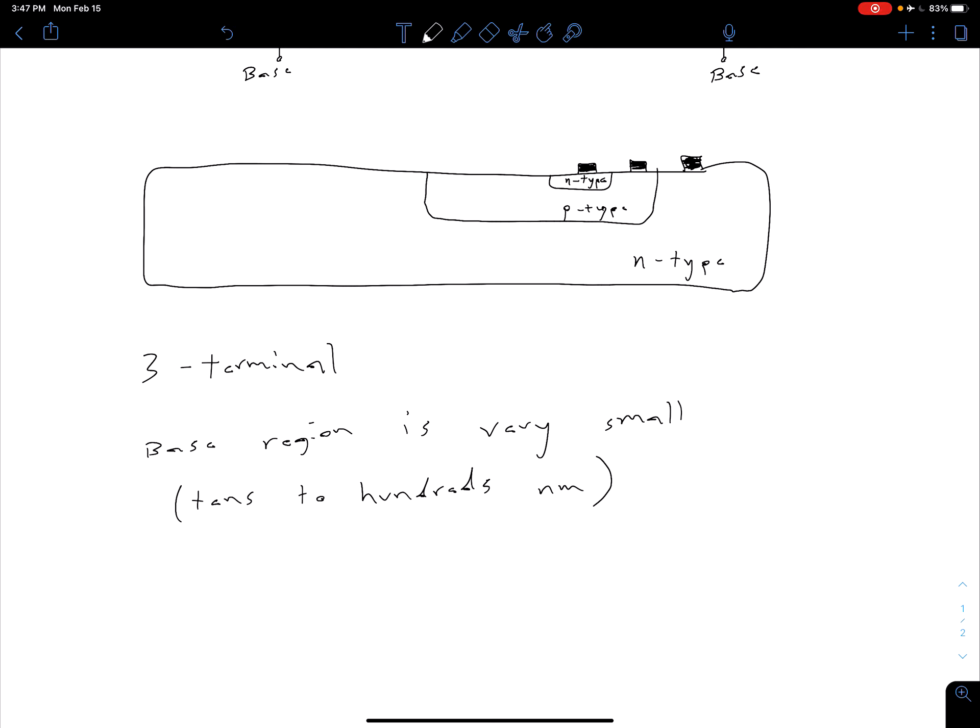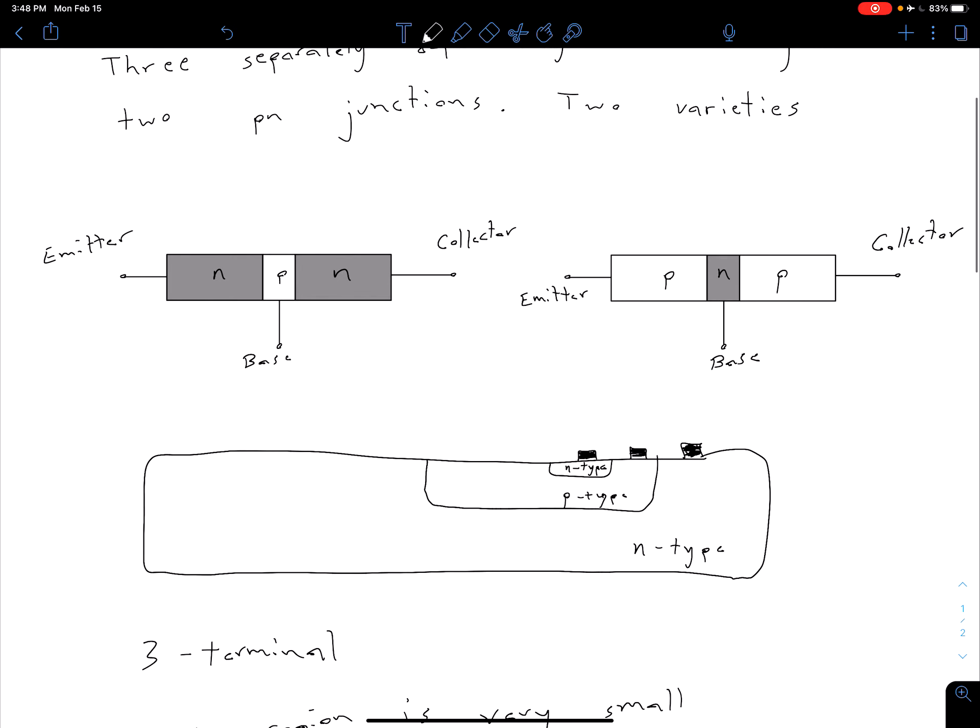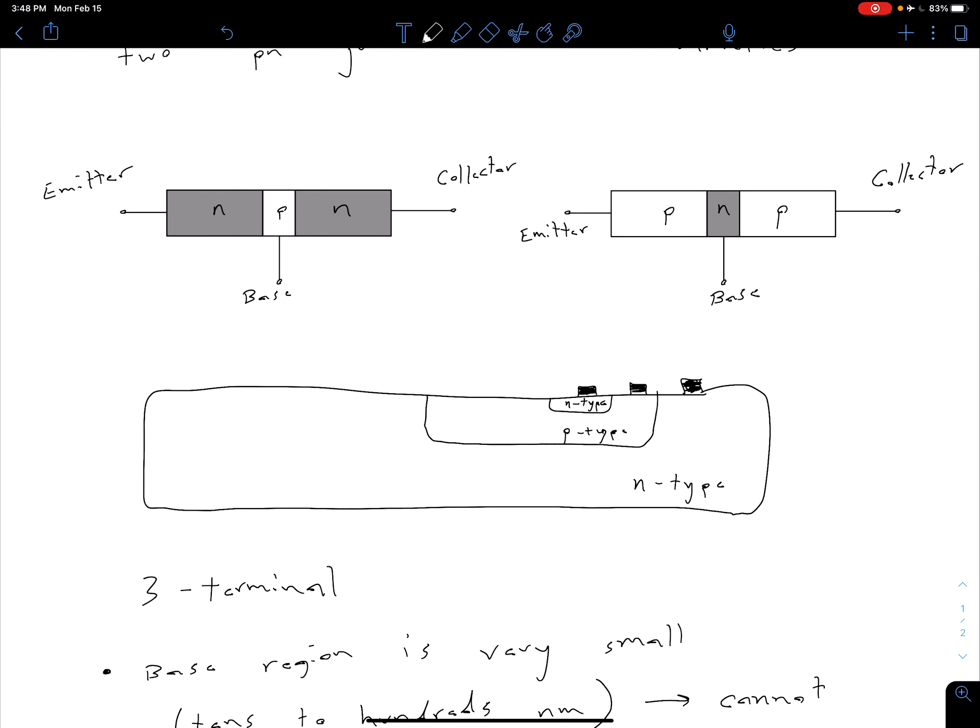Ultimately what this means though, this base region being very small, is we can't really approximate it as just two back-to-back diodes. If we take a look at these diagrams, at first we can say, well here we've got a PN junction, so that's like a PN diode. Here's another PN junction, so that's another PN diode. We could treat that maybe as two back-to-back diodes. But what we're saying is that base is so small that we basically have some interaction between those two junctions, which we're going to talk about in the next video.